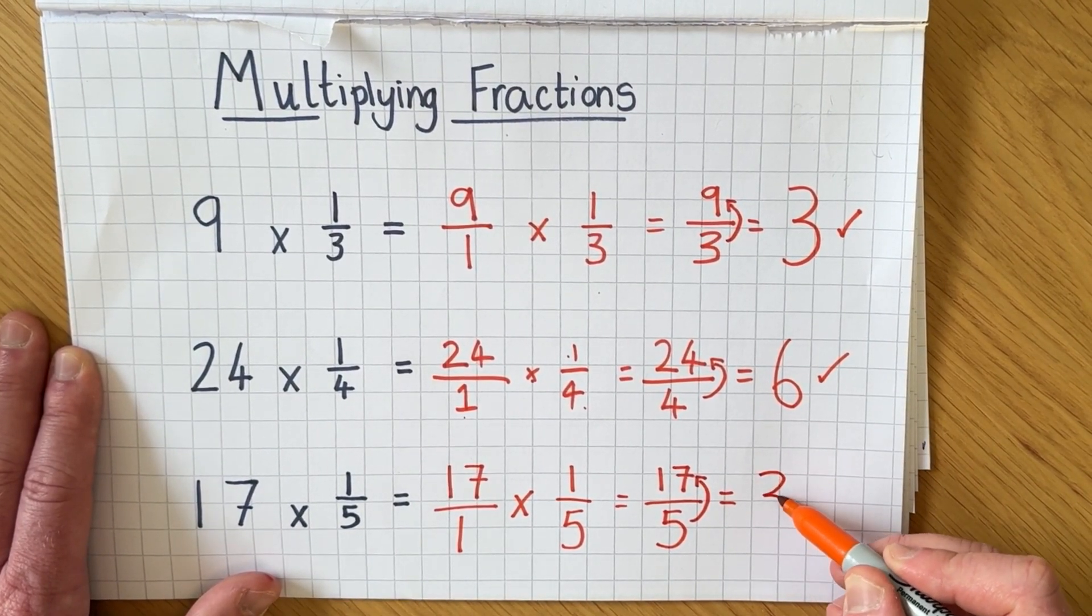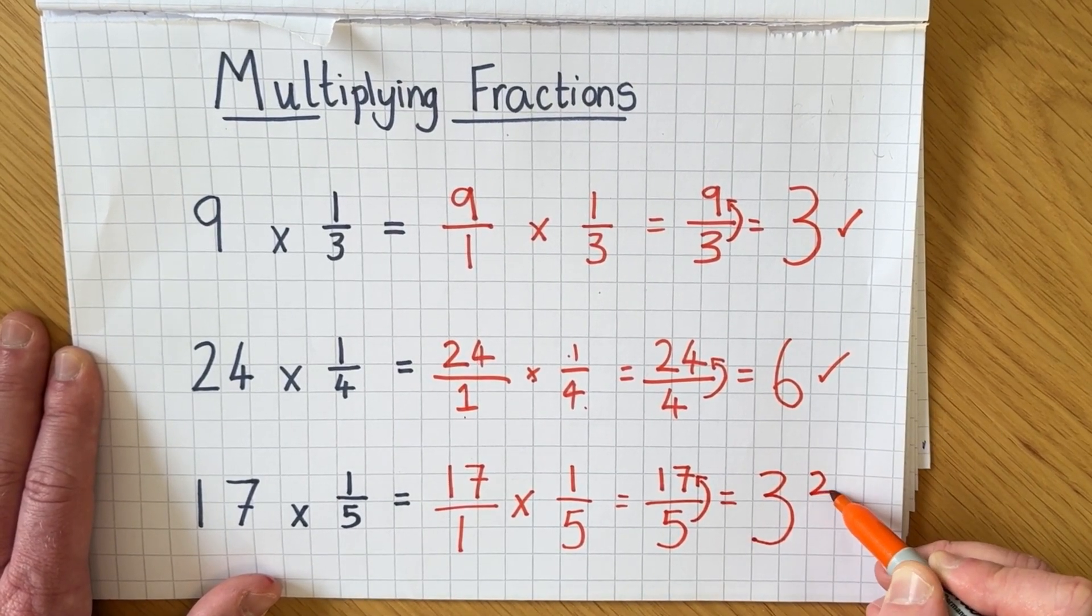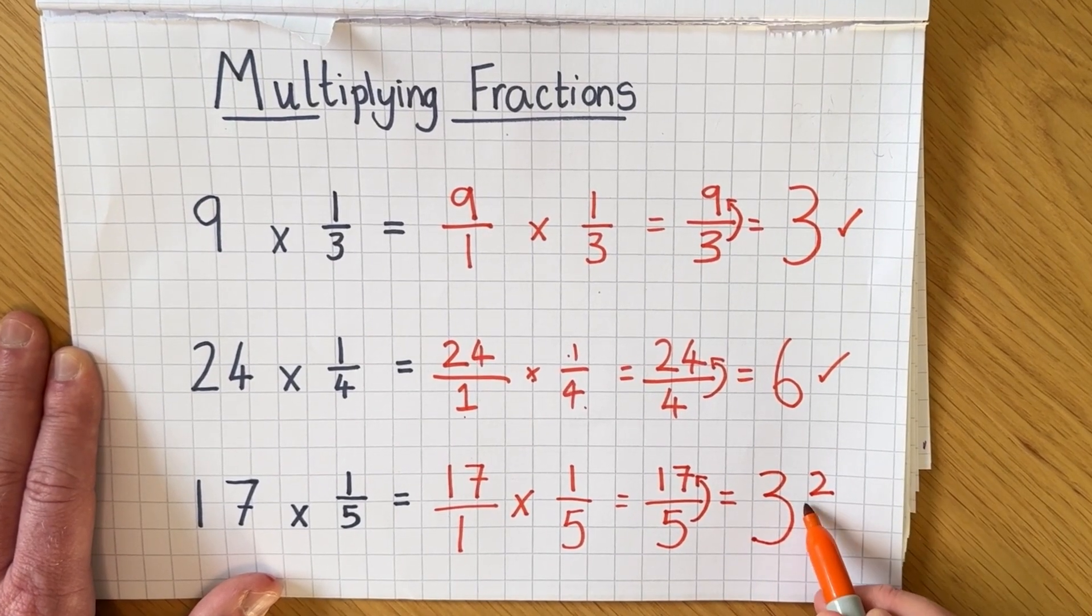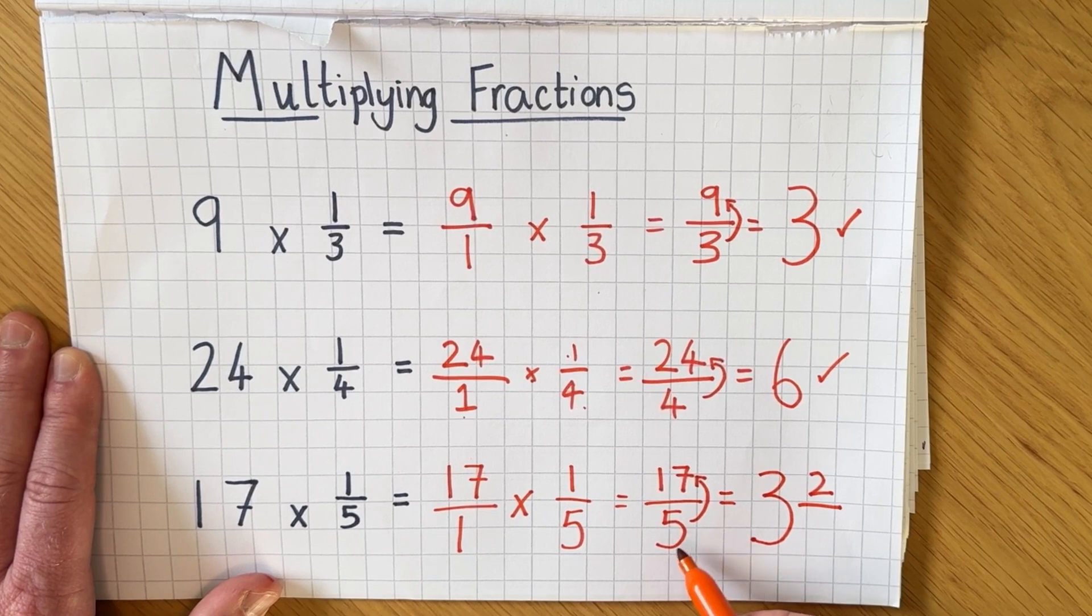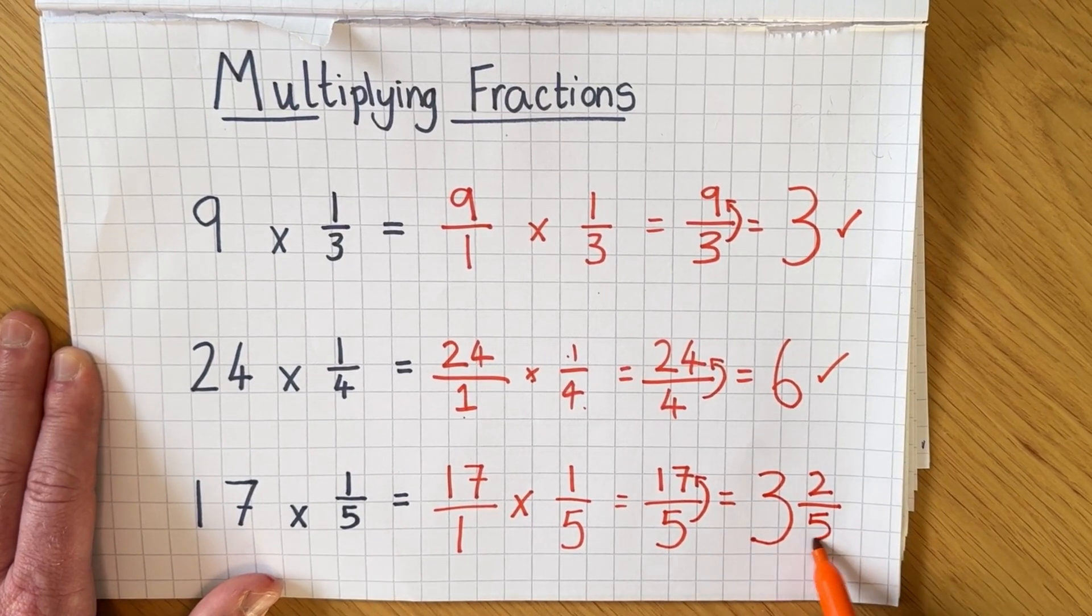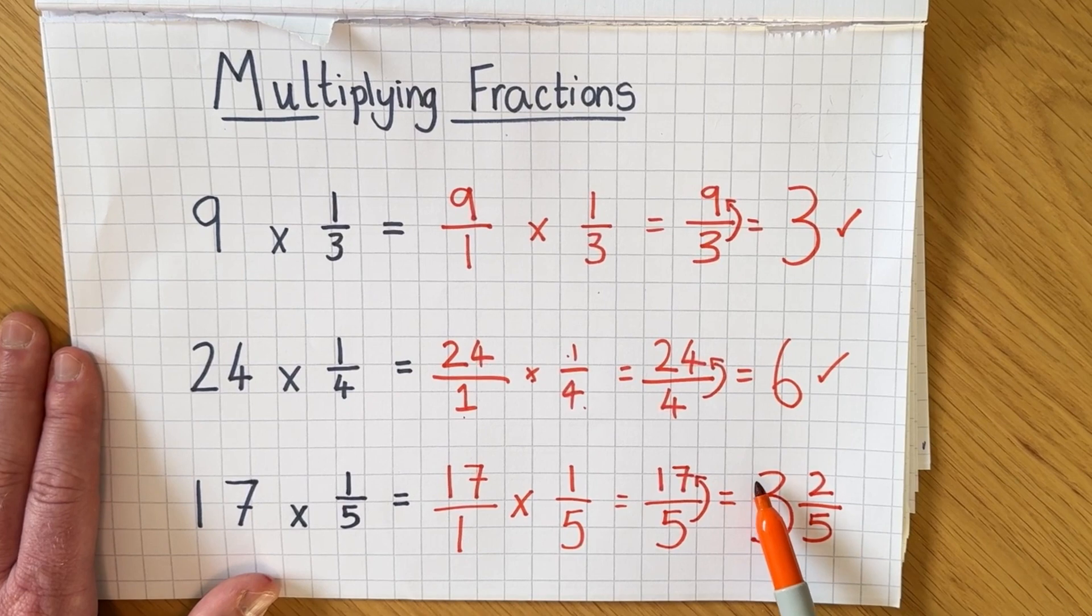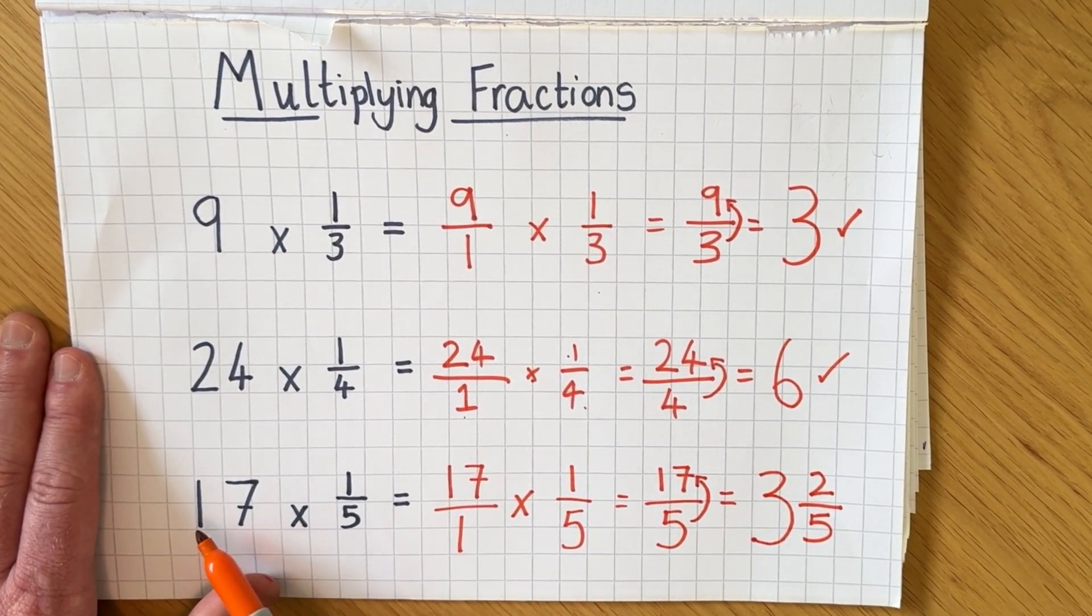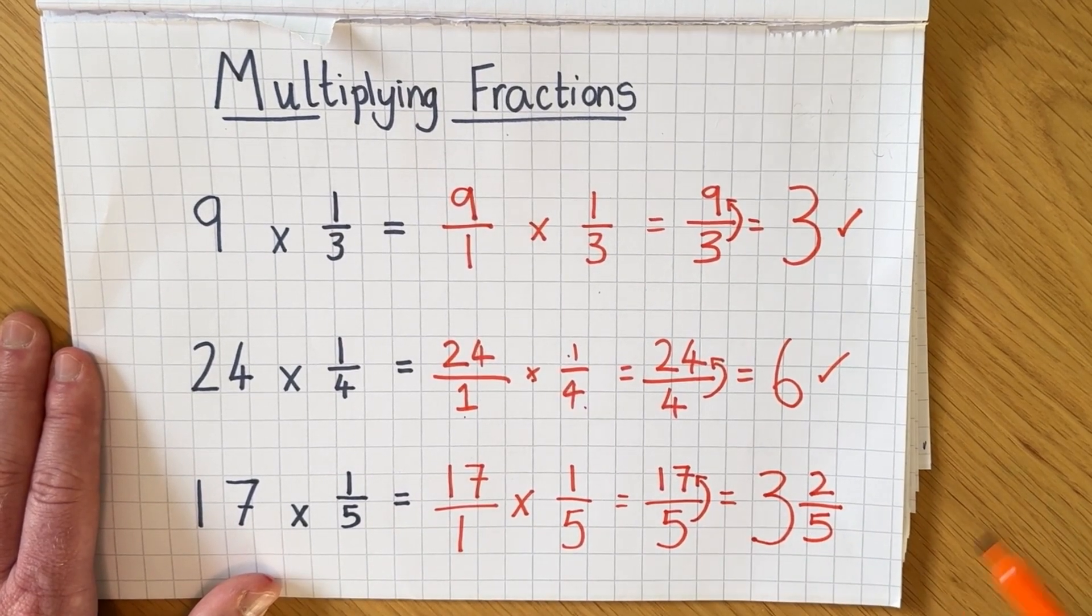There's three fives in 17 and there is two remainder. That two remainder is going to make up our numerator for the fraction and the five denominator we put that at the bottom. So the final answer is three whole ones and 2/5. So 17 multiplied by 1/5 is three whole ones and 2/5.